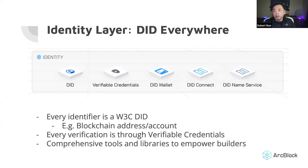For verification in a decentralized system, you cannot blindly trust the other party because you don't know if it's good behavior, bad behavior, or an unintentional mistake. So you have to verify everything is correct — that's how verifiable credentials come in. This is basically the principle of why we eventually adopted decentralized identifiers and verifiable credentials everywhere.